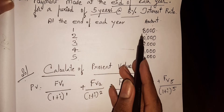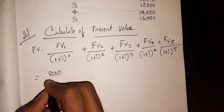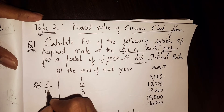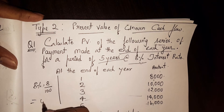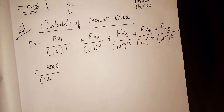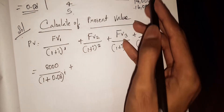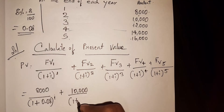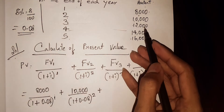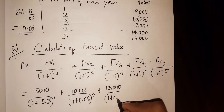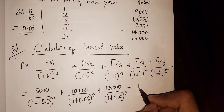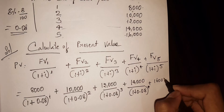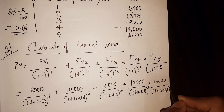First year: 8,000 divided by (1 + 0.08)^1. Since i is 8%, we calculate 8 divided by 100 = 0.08. Second year: 10,000 divided by (1 + 0.08)^2. Third year: 12,000 divided by (1 + 0.08)^3. Fourth year: 14,000 divided by (1 + 0.08)^4. Fifth year: 16,000 divided by (1 + 0.08)^5.